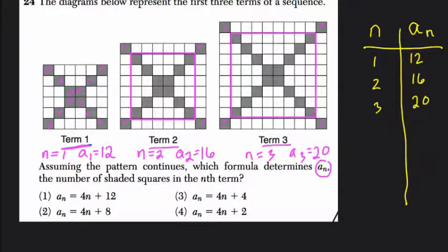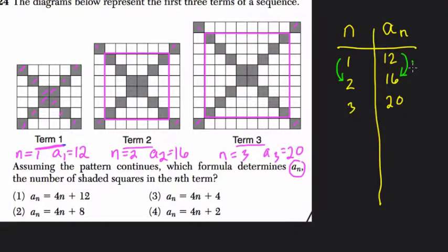So to create a formula for this, we would notice that every time n increases by 1, a sub n goes up by 4. That's a constant rate here. Assuming this continues, of course we don't know if term 4 explodes or becomes tiny or whatever, but assuming this continues, that would be a constant rate of change. If I clear this part of the table off, what we can say then...